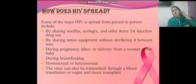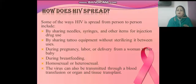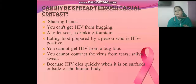HIV spreads through sharing needles, syringes, tattooing equipment, and piercing tools, as well as during pregnancy and cesarean cases. It can also be transmitted from mother to child, and through sexual contact — both homosexual and heterosexual. HIV cannot be spread through casual contact such as shaking hands, using a toilet seat, eating food prepared by an HIV-positive person, or through saliva or sweat.